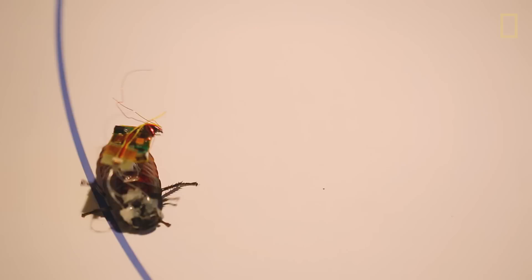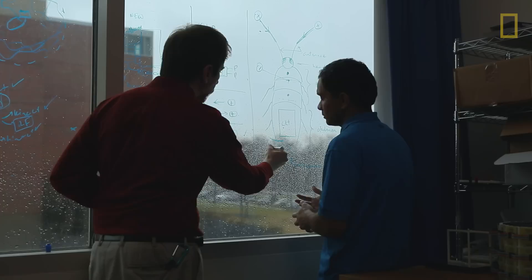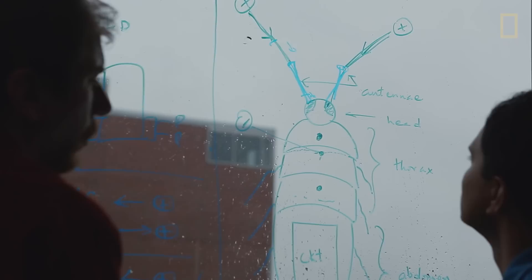Cockroaches in general navigate with their antenna. It senses obstacles, predators and so on and so forth. That information is transferred to electrical signals which is passed onto their brain. We are hacking into that medium.